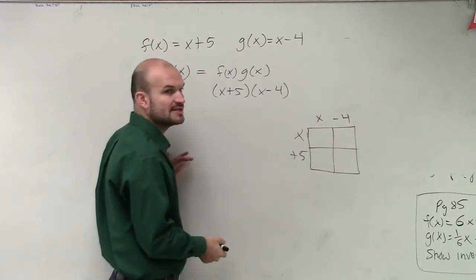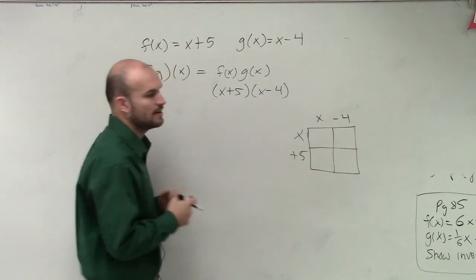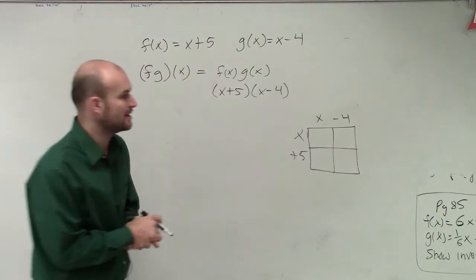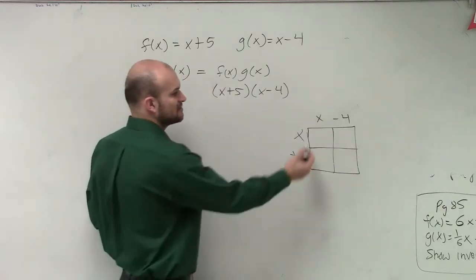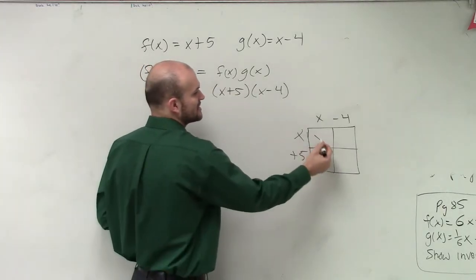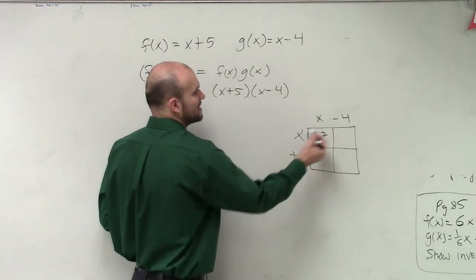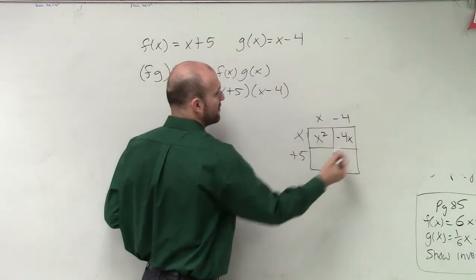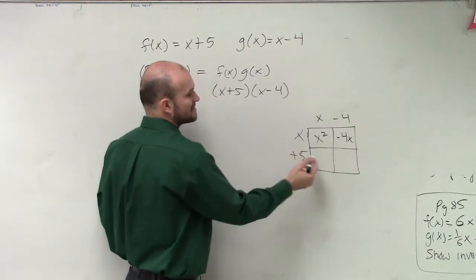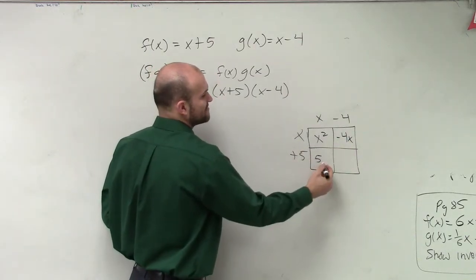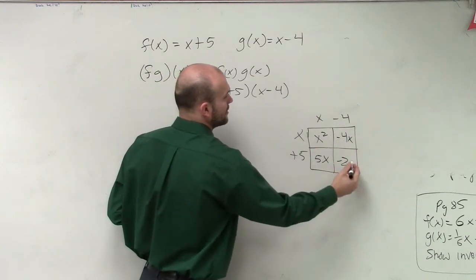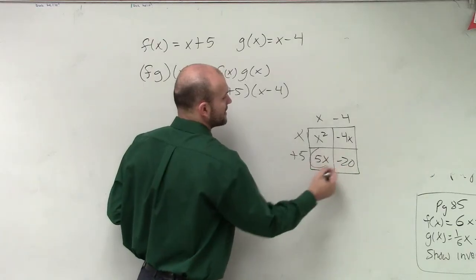What we simply do is label them with the box, and then find the area of each box. x times x is x squared; x times negative 4 is negative 4x; x times 5 is 5x; and 5 times negative 4 is negative 20.